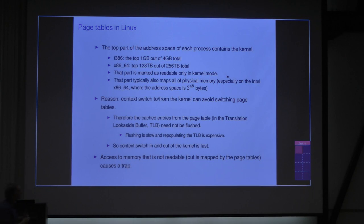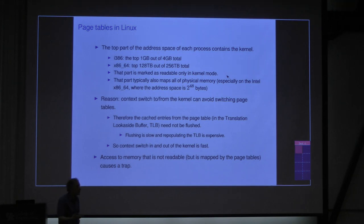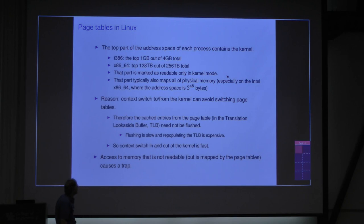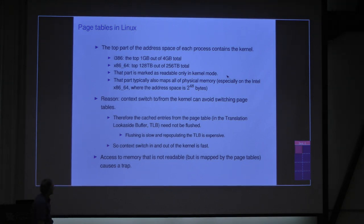The reason for having the kernel mapped in every process is that it makes the context switch avoid having to switch to a different page table. If you don't have to switch to a different page table, you don't have to flush things in the Translation Lookaside Buffer — the TLB — which is a kind of cache for the page table. It turns out that flushing the TLB is slow, and once it's flushed, reloading it is expensive. So the purpose of this design is speed. All of these problems come from the desire for speed.